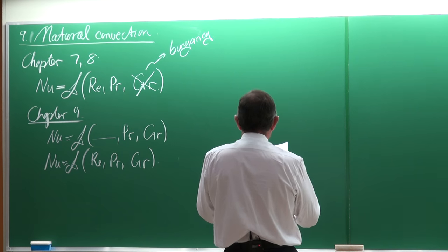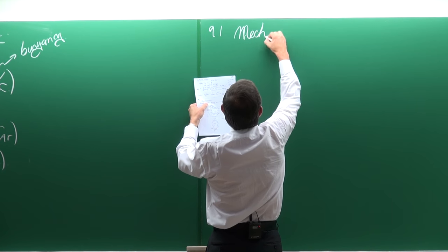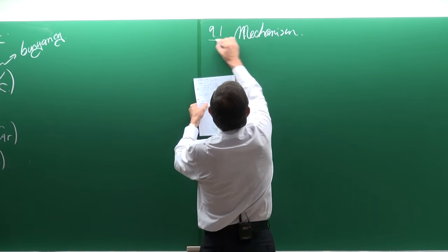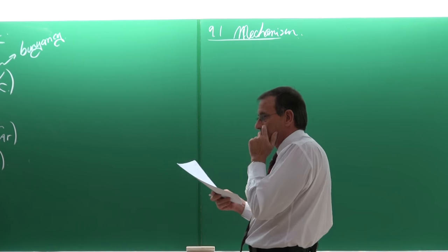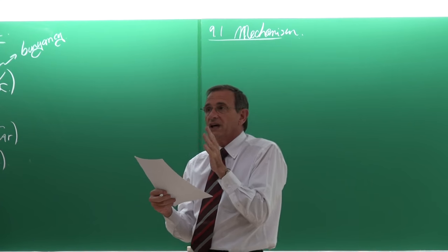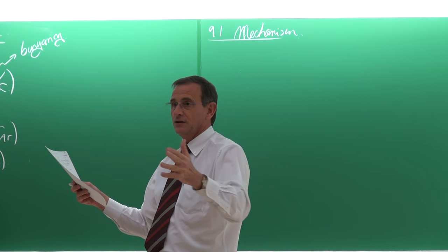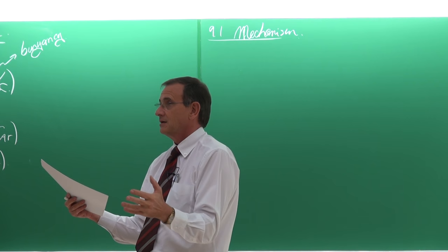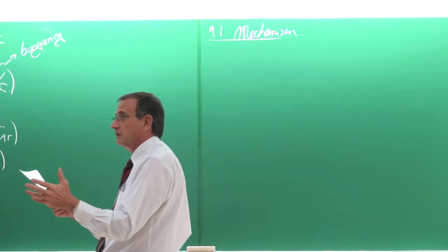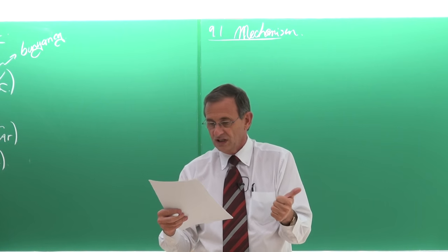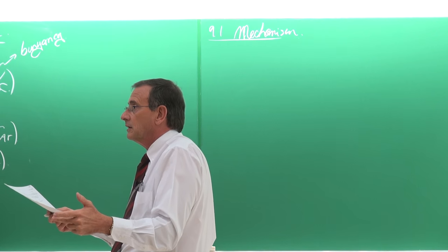Let's start with paragraph 9.1, the physical mechanism of natural convection. Before we look at the physical mechanism, let's think of examples where natural convection is important. In the electronics industry — power transistors, TVs, DVDs — they all get warm, and not all of them have a fan to get rid of the heat. The heat is disposed of by natural convection.